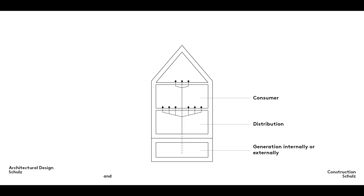Water, heat, electricity and air are all brought into buildings on the same principle. They are generated or supplied by an external plant or within the building. From there, they are distributed throughout the building floor by floor. The distribution network ends at the consumer, which may be a water tap, a radiator, an air vent or an electric socket for example. Let's take a closer look at the three stages of this process.